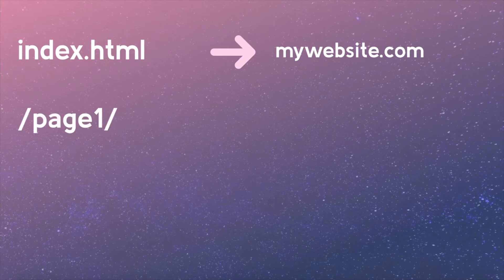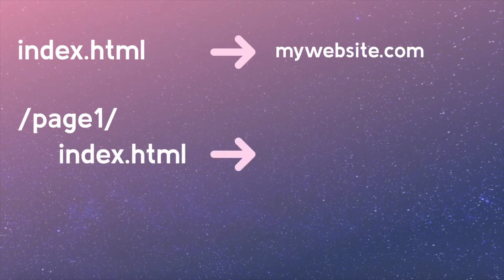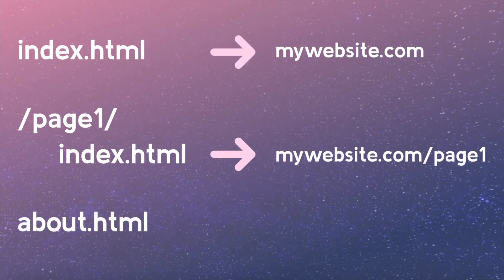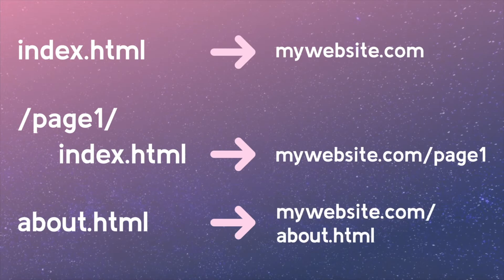If we make a new folder called page 1 and add an index.html, then visiting mywebsite.com would display the content of that index. If you use any other name besides index, such as about.html, then the URL would become mywebsite.com/about.html by default, which is how you create additional pages for your website. But we'll get more into that later.